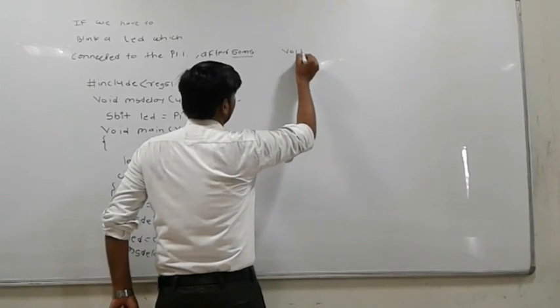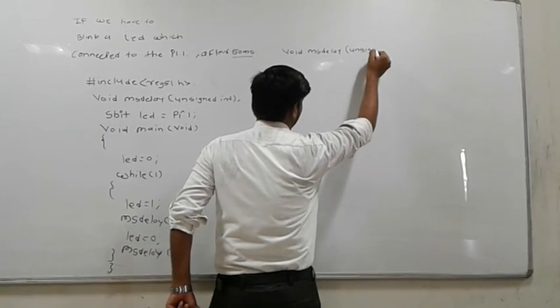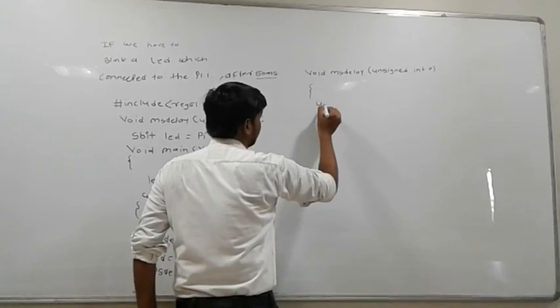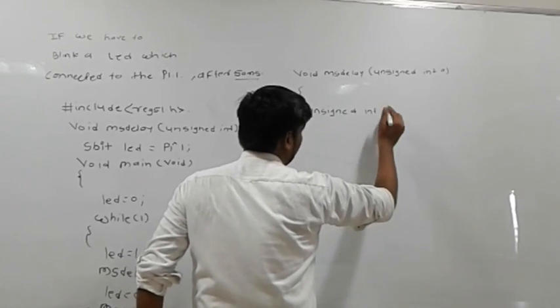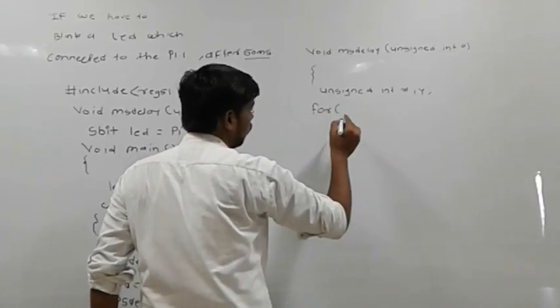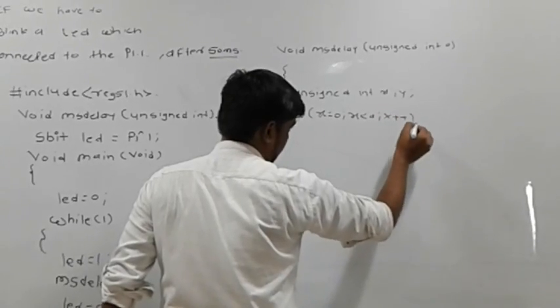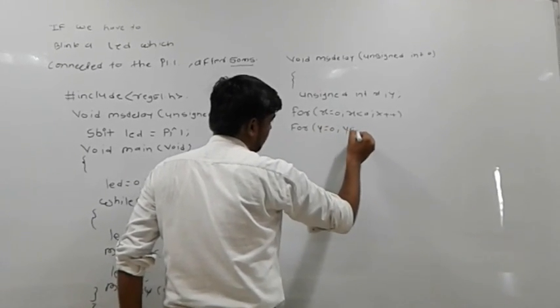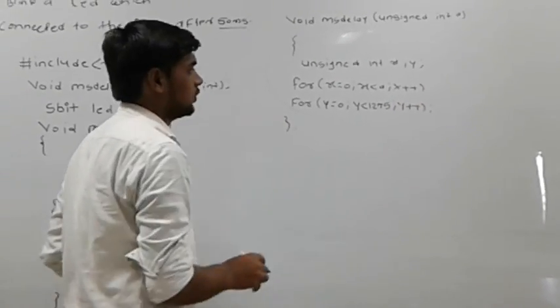After then write the program for delay. Void ms delay unsigned integer a, then while, open the bracket. Again introduce the variables unsigned integer x comma y, then semicolon. Use the for loop. For x equal to 0, x is less than a, x plus plus. Then again use the second for loop, y equal to 0, y is less than 1275, y plus plus, then semicolon. Close this bracket.